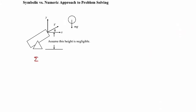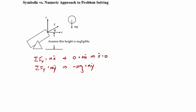Applying Newton's second law symbolically: in the x direction, there are no forces, so ẍ = 0. In the y direction, the sum of forces equals m × ÿ, and the only force is the weight, −mg. The m's cancel, giving ÿ = −g.